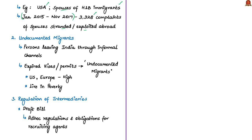The next excluded category discussed by the authors is undocumented migrants. The general understanding of undocumented migrants means those who leave India through informal or illegal channels. But most cases of undocumented migrants include those whose visas or permits have expired. Especially in Gulf countries, many Indian migrant workers escape from the exploitation of their employers due to things like overtime working, less pay, or harder jobs.